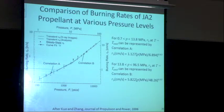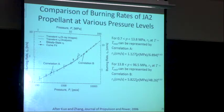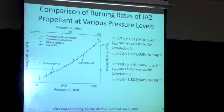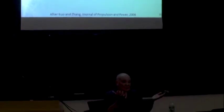Another factor showing up in burning rate data is pressure breaks. Looking at JA2 over an extended pressure range, as I increase pressure I have a certain pressure exponent of about 0.63, and then beyond a certain point the pressure exponent changes — it goes up to a value of about 1. The question is why: is that a chemical process happening in the gas phase or condensed phase, or is it a physical process? These are things people don't understand yet — what's causing these slope breaks in the pressure dependence.